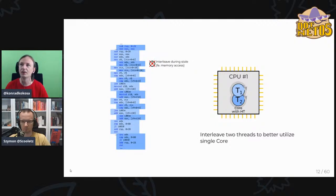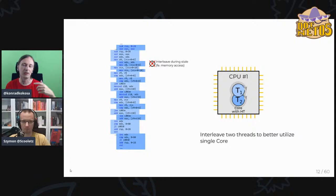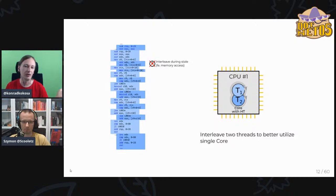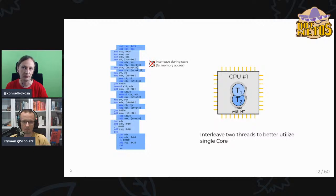Hyper-threading interleaves two streams of instructions. When one stream is waiting on something, we execute the CPU-bound instruction of another thread. We interleave two threads so there are no waits — we consume the hardware thread optimally based on the typical stream of mixed instructions in our programs.